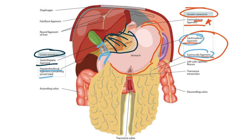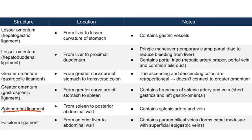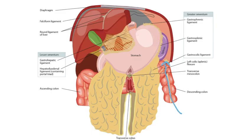We just discussed the two main components of the greater omentum: the gastrosplenic and gastrocolic ligaments. Now let's discuss the splenorenal ligament. As its name implies, it connects to the spleen. What's less intuitive is that it connects to the posterior abdominal wall — at the level of the kidney — which is why we call it the splenorenal ligament. It contains the splenic artery and vein, which is an important distinction from the gastrosplenic ligament, which contains branches of the splenic artery and vein.